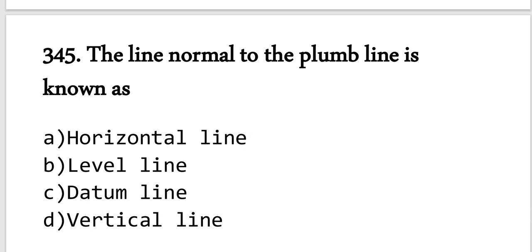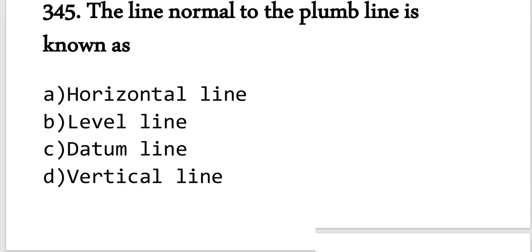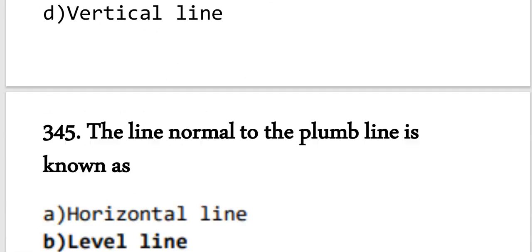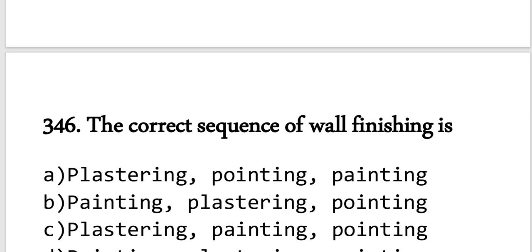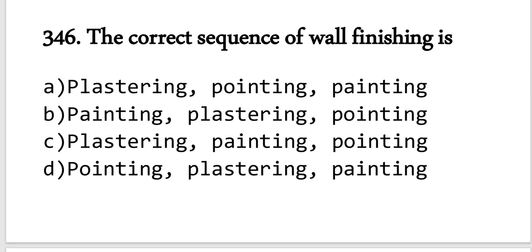Question number 344: The line normal to the plumb line is the level line, which is basically the horizontal line.